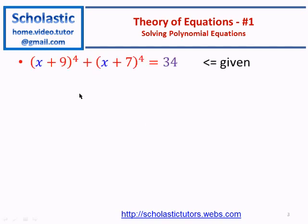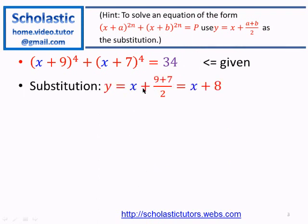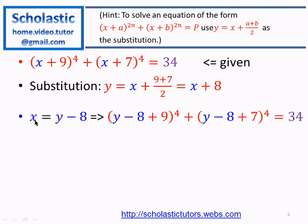So first we write what is given: (x + 9)⁴ + (x + 7)⁴ = 34. We substitute using the hint: y = x + (a + b)/2 = x + (9 + 7)/2 = x + 8. So x = y − 8. Substituting: (y − 8 + 9)⁴ + (y − 8 + 7)⁴ = 34.